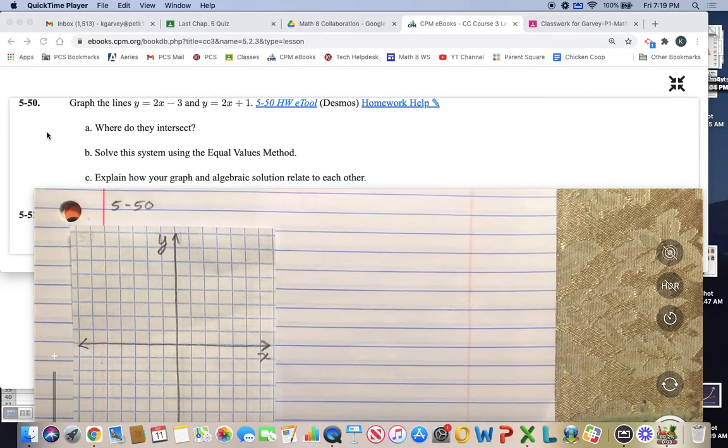5-50. Graph the lines y equals 2x minus 3 and y equals 2x plus 1. And then we'll answer these questions. First of all, where do these two lines intersect?